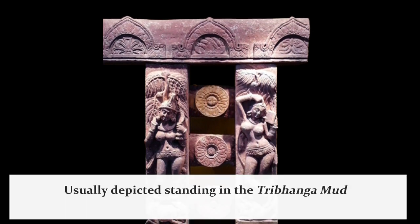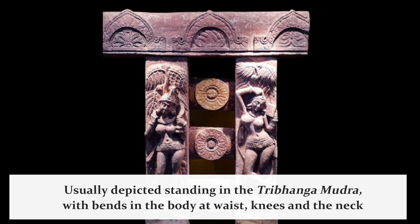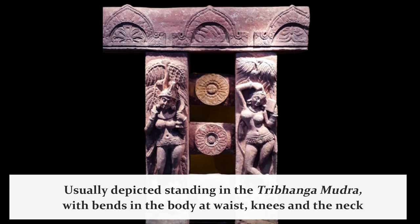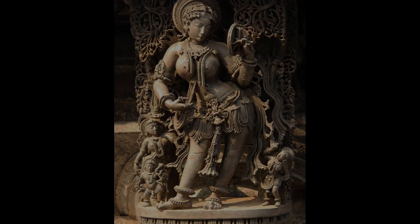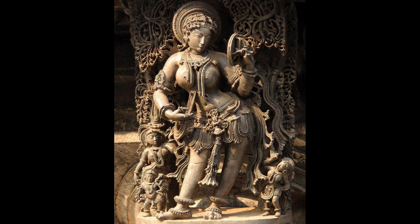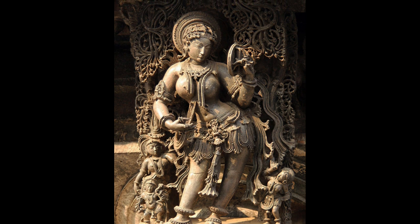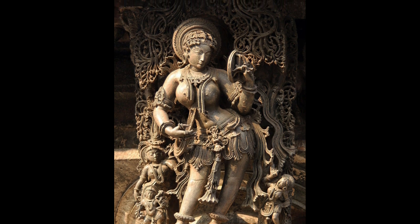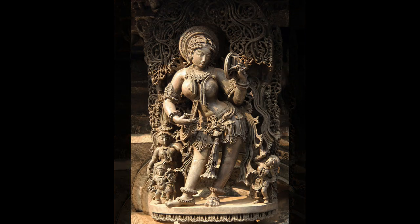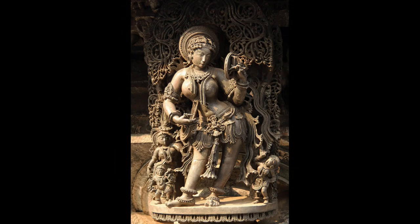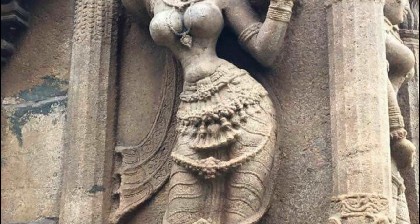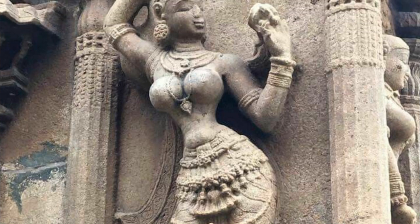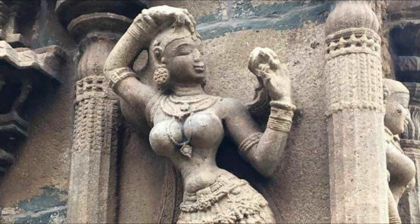A woman usually standing in tribhanga mudra — a threefold pose consisting of bends in the body at the waist, knees, and neck — represents the darpan dharani sculpture, shown holding a handheld or box mirror. The figure always points to its head or appears to be combing its hair. Although these may be defined as general features, there are several variations in what the figures seem to be adjusting or correcting in the mirror.